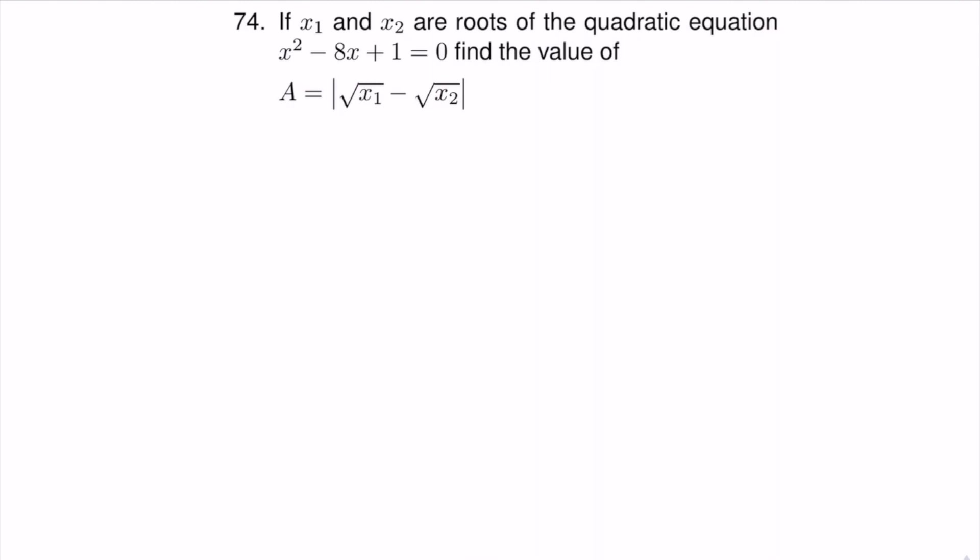In this problem, given the quadratic equation, we want to find the numerical value of A, which is the absolute value of square root of x1 minus square root of x2, where x1 and x2 are the two roots of this quadratic equation.